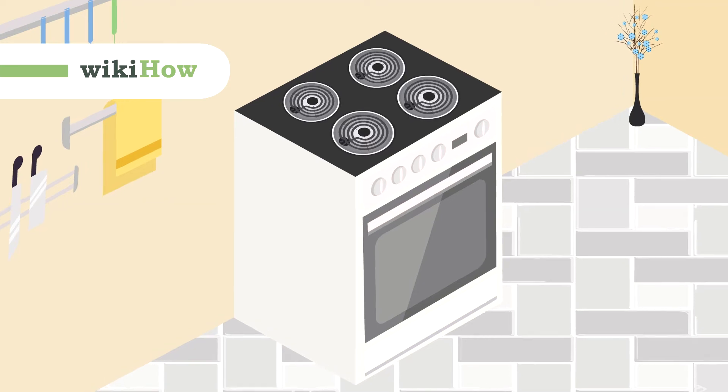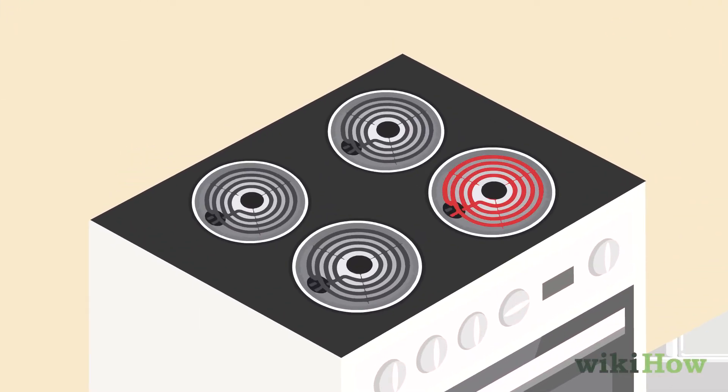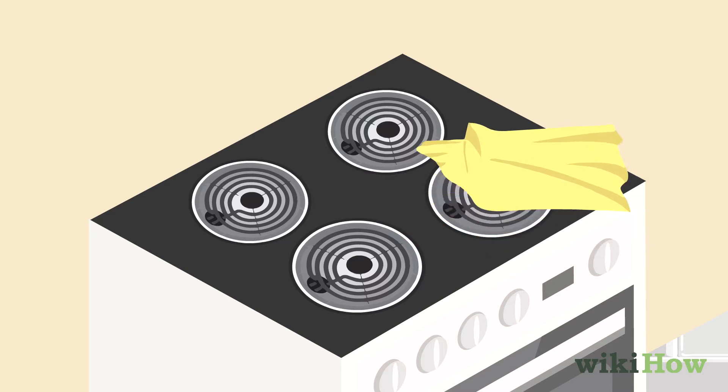To clean an electric stove with metal coils, first heat the coils on high for a few minutes to burn off any grime. Then, let them cool and wipe them down with a damp cloth.